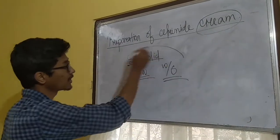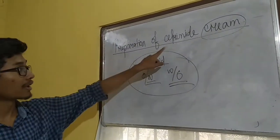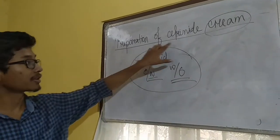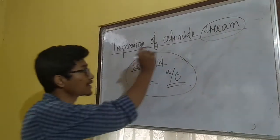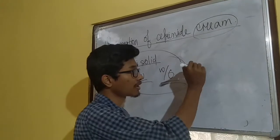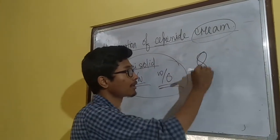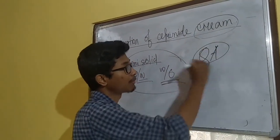Now we are preparing cetrimide cream. So what is cetrimide? Cetrimide is a quaternary ammonium compound.